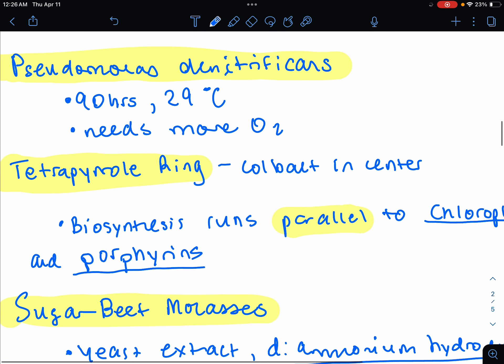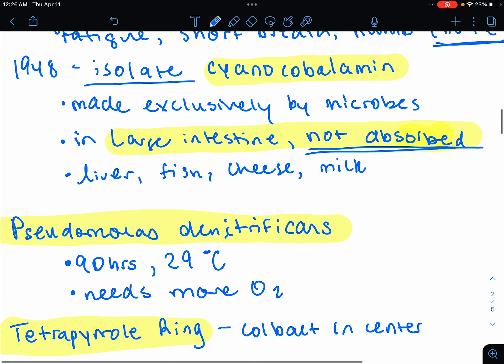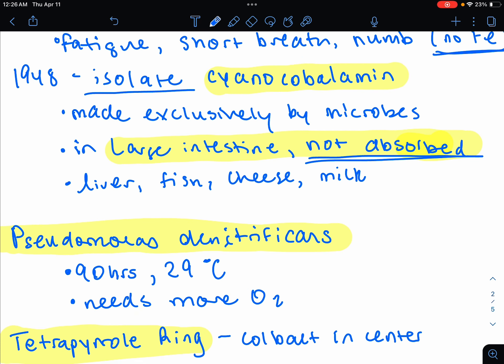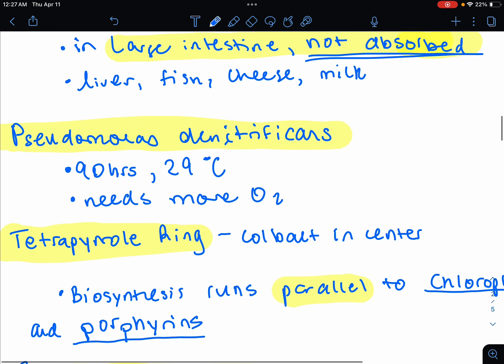The microorganism that makes vitamin B12, again, we're talking about the large intestine. So some Pseudomonas denitrificans will be used in the industrial sense. But then again, B12 was also made by the large intestine bacteria. But in an industrial sense, it's Pseudomonas denitrificans. And it's the most productive species. It's also gram-negative, as expected, of Pseudomonas. This is a 90-hour fermentation at 29 degrees Celsius. You need a lot of O2 because this Pseudomonas is aerobic.